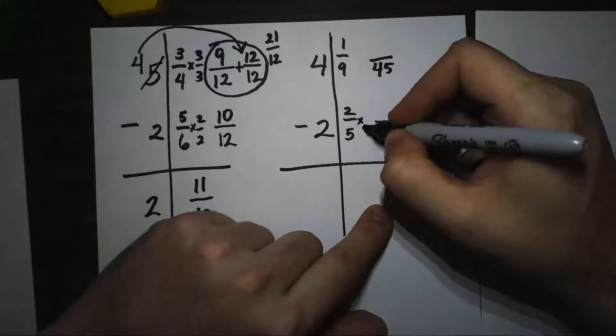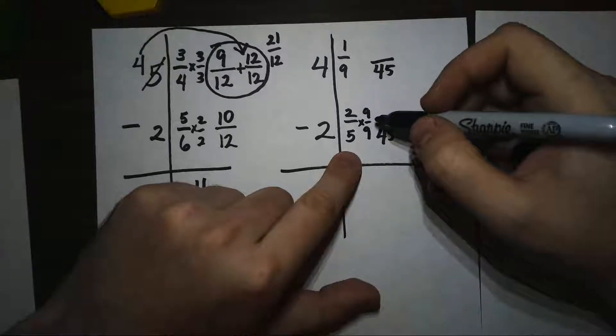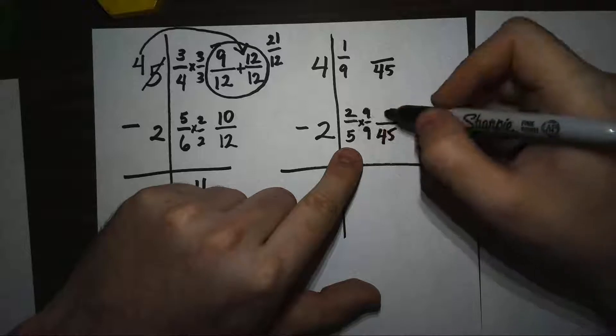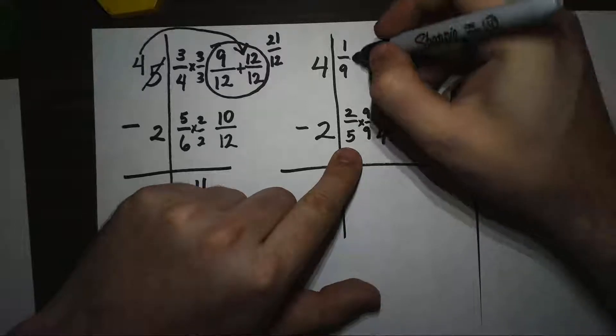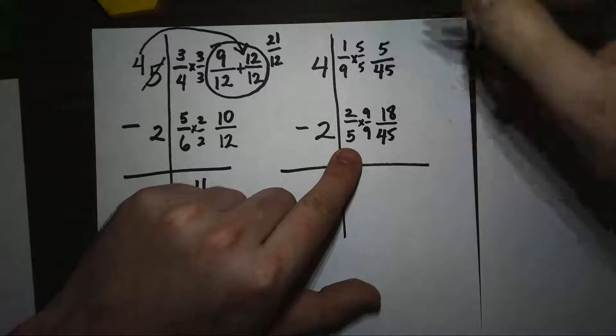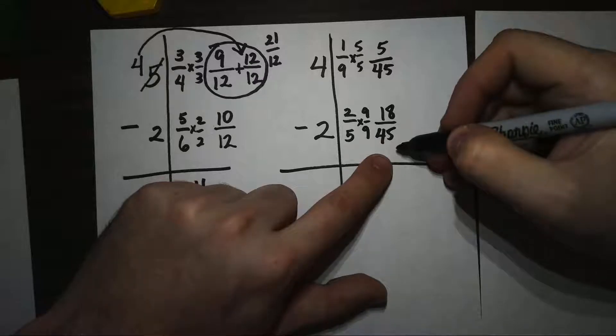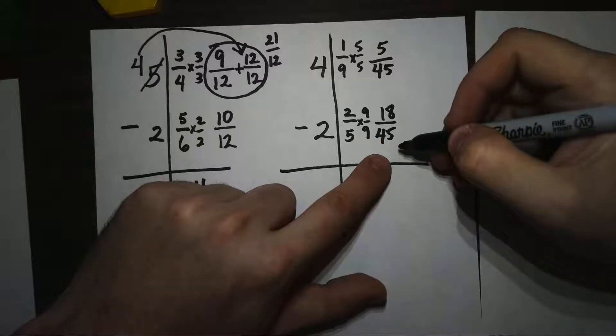5 times 9 is 45, so I'm going to multiply the top and the bottom by 9/9, so I'm not changing my fraction. 2 times 9 is 18. And 9 times 5 is 45, multiply by 1 whole. And now I'm trying to do 5/45 minus 18/45—can't do that without getting a negative number.